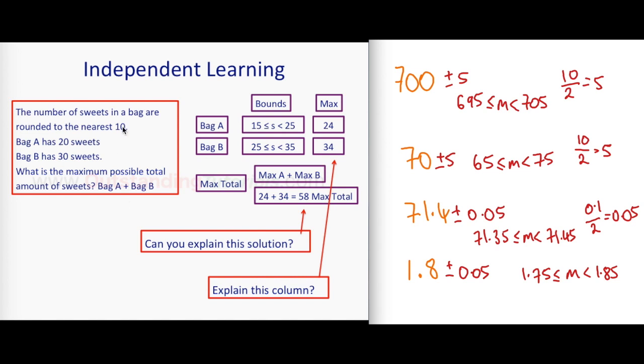This is saying the number of sweets in a bag are rounded to the nearest 10. So bag A has 20 sweets, bag B has 30 sweets, but they've been rounded. Factories and wherever you tend to have mass production, machines can have bags with some variation of sweets because the machine is doing this. So it's being rounded - the number of sweets in bag A rounded is 20, in bag B the number of sweets rounded is 30.